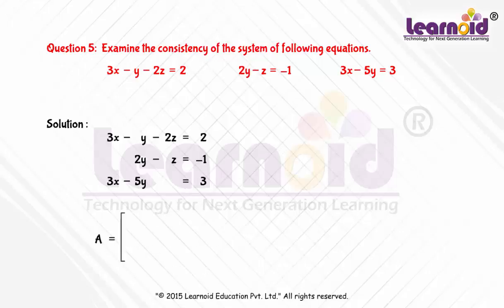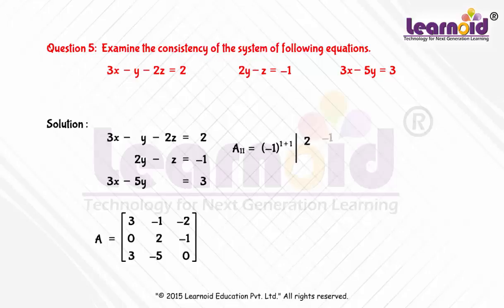Let us find the adjoint of A. To find the adjoint of A, we will first find the cofactors. A11 is equal to (-1)^(1+1) into determinant [2, -1; -5, 0], which is equal to minus 5.